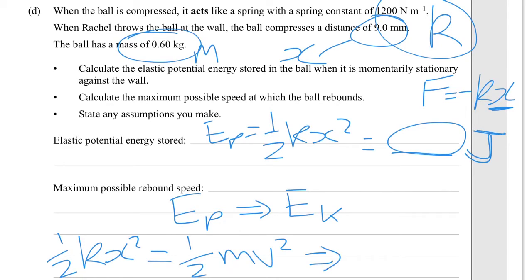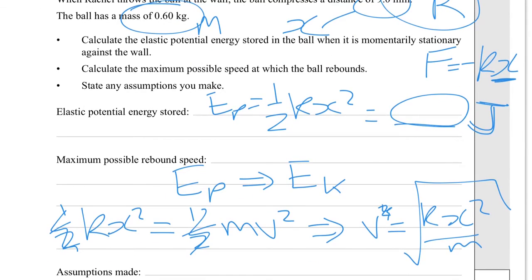We rearrange for V, which is going to be, I'll just give you the V squared part, and then you can square root it all. The halves are going to cancel out. So it's going to be KX squared over M. And then you're going to square root the whole thing. You can just plug those numbers in and do it.